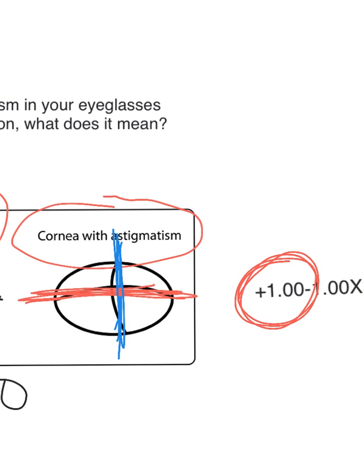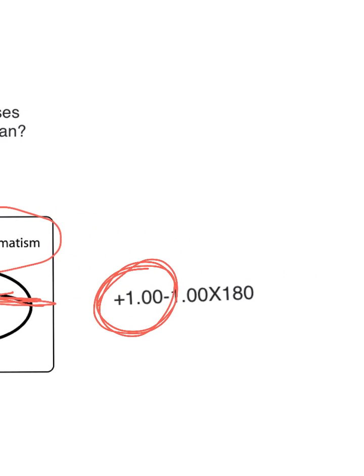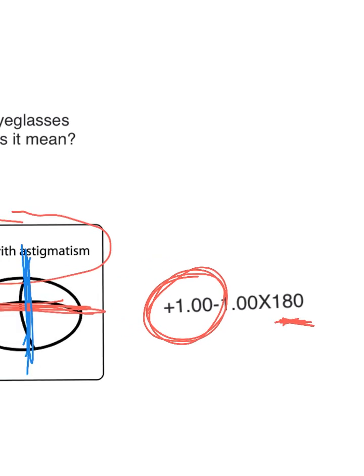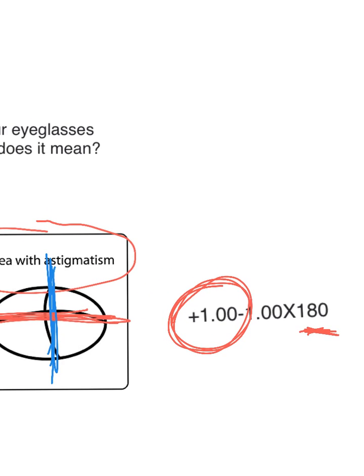The way you find out which one is plus one, you look at the axis. The axis here is 180. So you know that the plus one is on axis 180 — the red meridian here would be plus one.